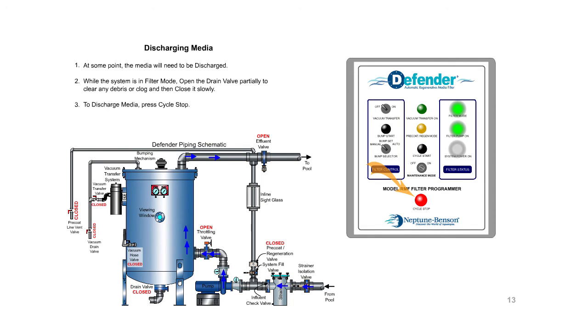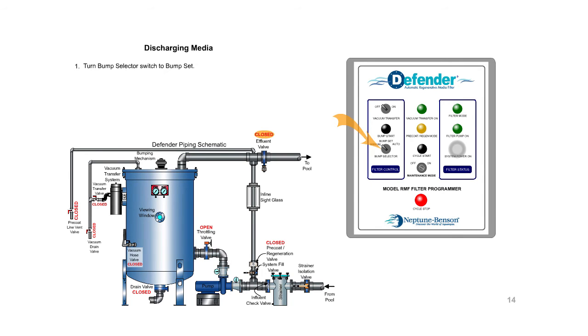Discharging media. At some point, the media will need to be discharged. While the system is in filter mode, open the drain valve partially to clear any debris or clog and then close it slowly. To discharge media, press cycle stop. Turn bump selector switch to bump set. Bump the filter approximately 5 to 10 times by pressing bump start.